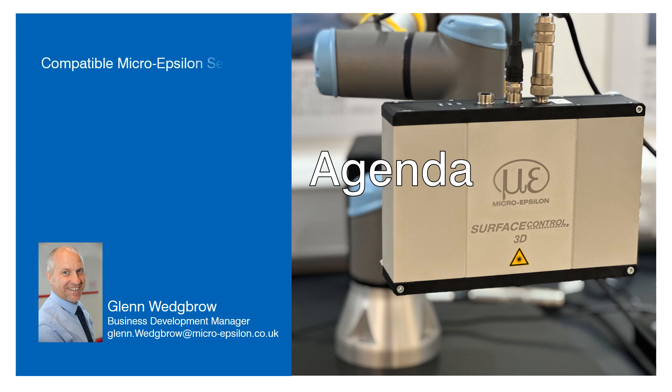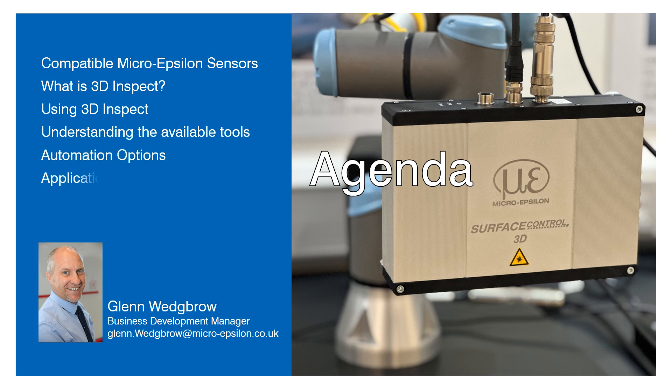In this session I will start with a brief reminder of the sensors available from MicroEpsilon capable of 3D measurement before I explain the concept behind our software called 3D Inspect. After this I will run through some of the key inspection tools available and describe how to use the data and set the pass-fail criteria along with a couple of application examples before ending with a short summary.